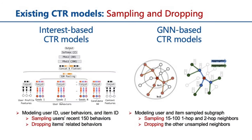Click-through rate prediction plays a pivotal role in the functionality of online recommender systems. It involves analyzing detailed information about a user and an item to predict whether the user will interact with the item. However, the need for rapid response time in these systems presents a significant challenge. Traditional CTR models have relied on sampling only a small part of user behaviors and discarding the others to make it efficient. This approach not only introduces a risk of losing valuable information, but also doesn't fully address the constraints imposed by the system's latency requirements.